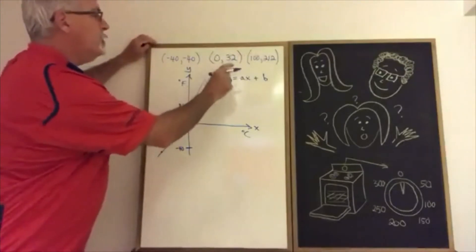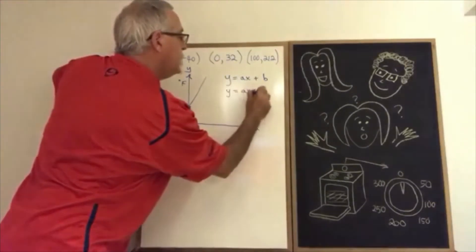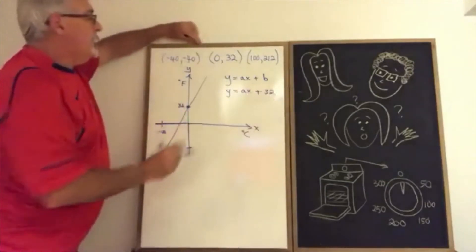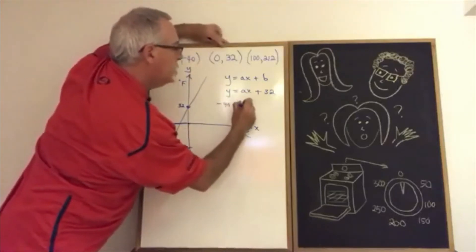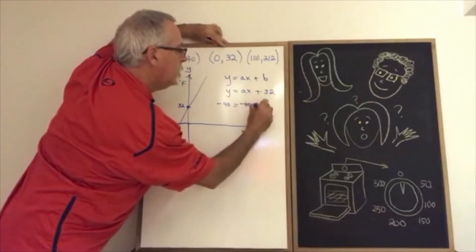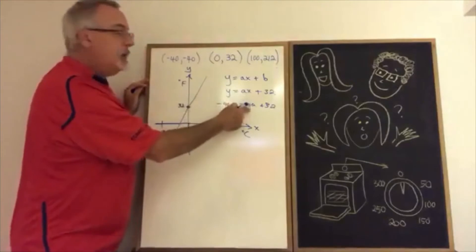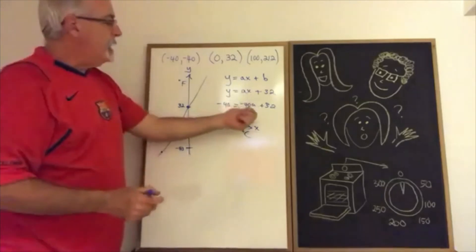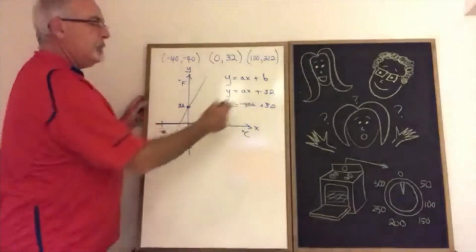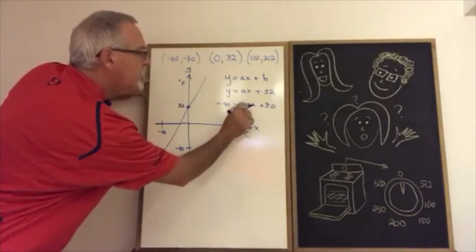What do I do next? I'm going to plug the y-intercept into the b position in the form we know: y equals ax plus 32. I'm going to plug the minus 40, minus 40 point into the x and y positions. Notice that it's ax - the a came first, but because the number that I know, the minus 40, is an x, I put minus 40 first, the way we're used to doing when we have a term that is a combination of a numerical coefficient and a variable.